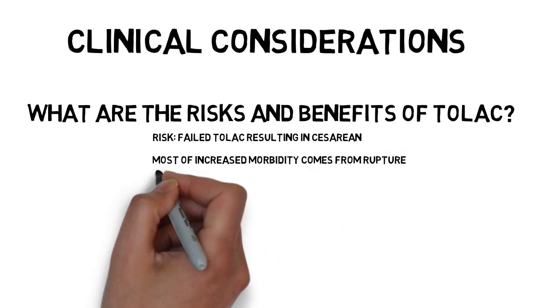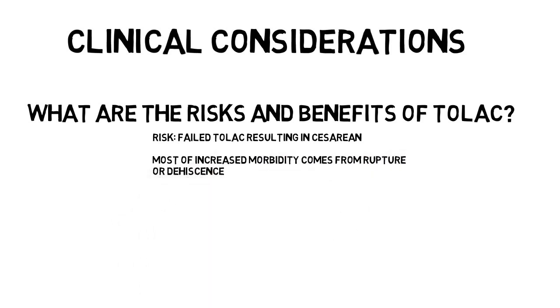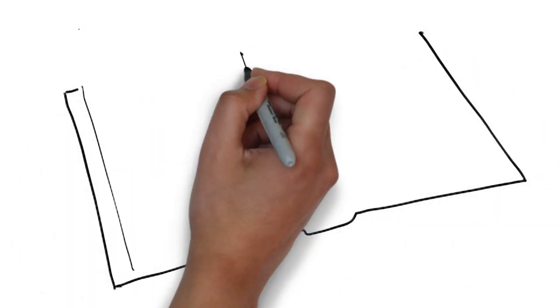making failed TOLAC worse than elective repeat and VBAC better. Most of the increased morbidity comes from uterine dehiscence or rupture. A limitation of the literature is that the terms dehiscence and rupture are not defined consistently and often used interchangeably.